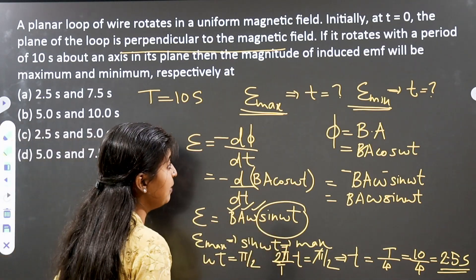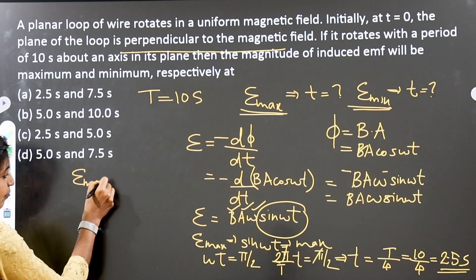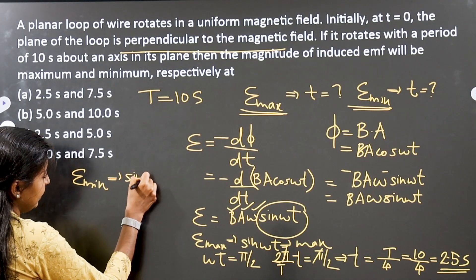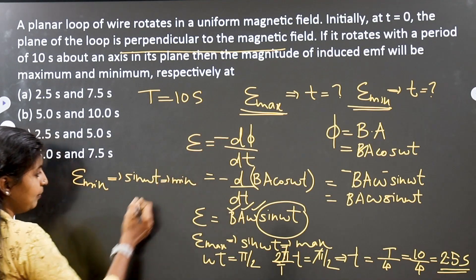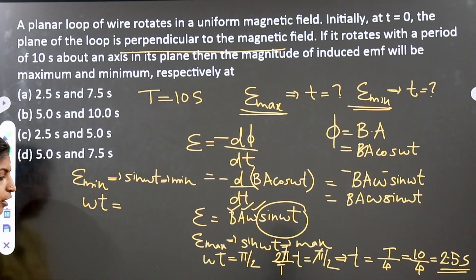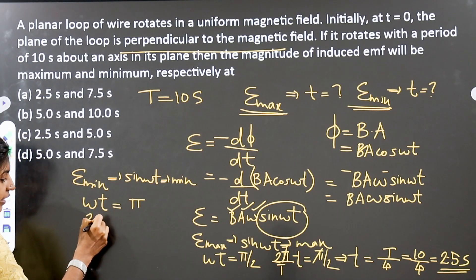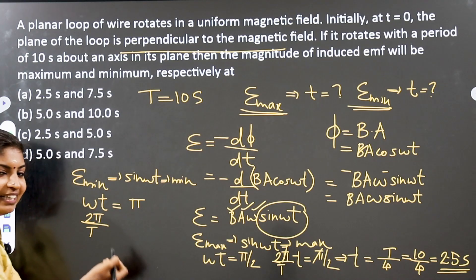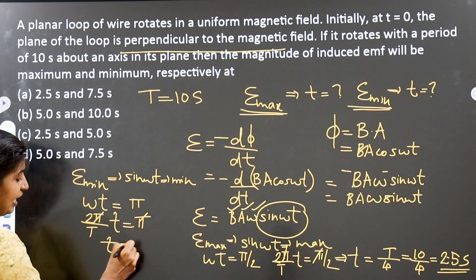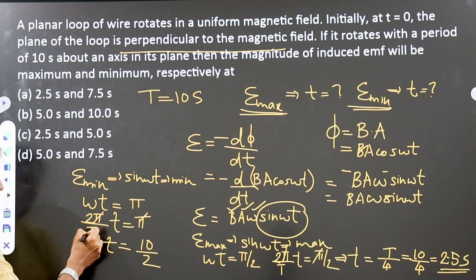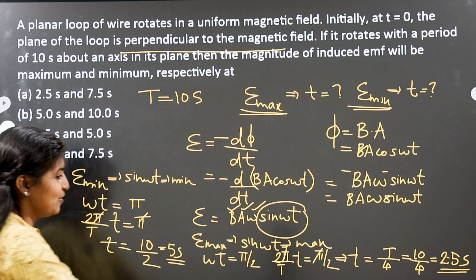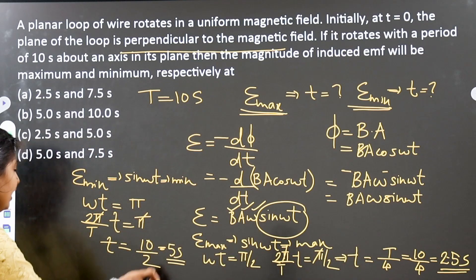Now for induced EMF minimum time: sin(ωt) is minimum when sin(ωt) = −1, i.e., ωt = π. Since ω equals 2π/T, we get t = T/2. With T = 10 seconds, t = 10/2 = 5 seconds. Very easy. So the answers are t = 2.5 seconds and t = 5 seconds, from JEE 2020.